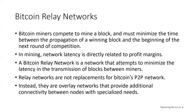A Bitcoin relay network is a network that attempts to minimize the latency in the transmission of blocks between miners. The original Bitcoin relay network was created in 2015, replaced in 2016 with FIBER — a UDP-based relay network that relays blocks within a network of nodes and implements compact block optimization to further reduce data transmitted and network latency. Relay networks are not replacements for Bitcoin's peer-to-peer network; instead they're overlay networks providing additional connectivity between nodes with specialized needs, just like freeways are not replacements for rural roads, but rather shortcuts between two points of heavy traffic.